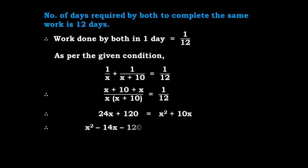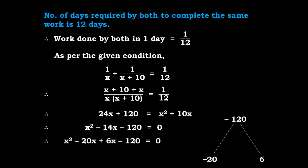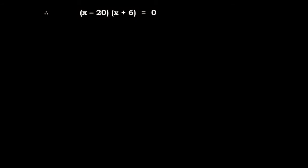That gives us X² − 14X − 120 = 0. We factorize −120 so that the sum is −14; the factors are −20 and +6. So X² − 20X + 6X − 120 = 0. Making groups of two terms: X(X − 20) + 6(X − 20) = 0, giving (X − 20)(X + 6) = 0.